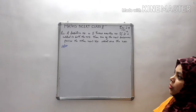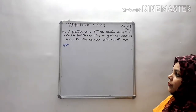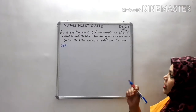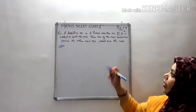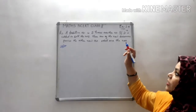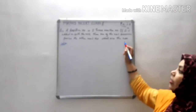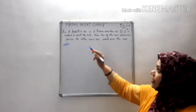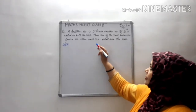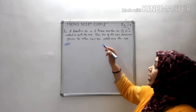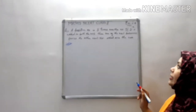Now come to question number 2. The second question says: A positive number is 5 times another number. If 21 is added to both the numbers, then one of the new numbers becomes twice the other new number. What are the numbers?